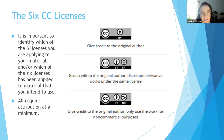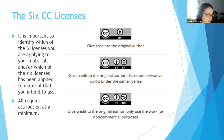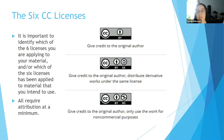The next license is the CC BY SA — the attribution share-alike license. It can be used for any purpose, even commercial, as long as credit is given to the author. However, any modifications to the work must be shared with the same license. So if you took a worksheet licensed under this and wanted to change it and add things, you would have to put the same type of Creative Commons license on it, even if you made changes.